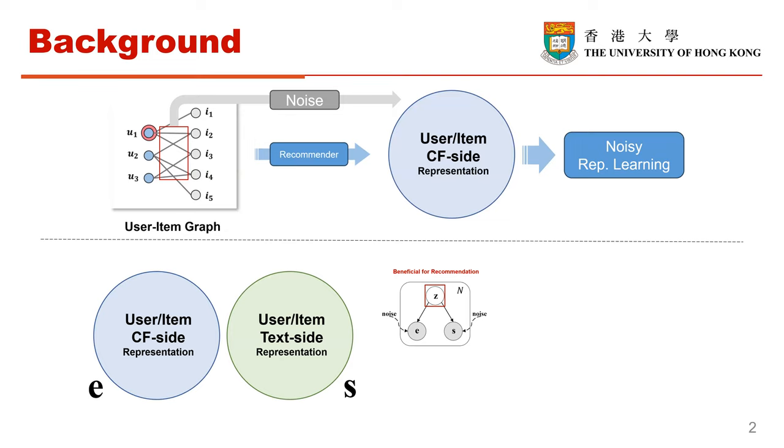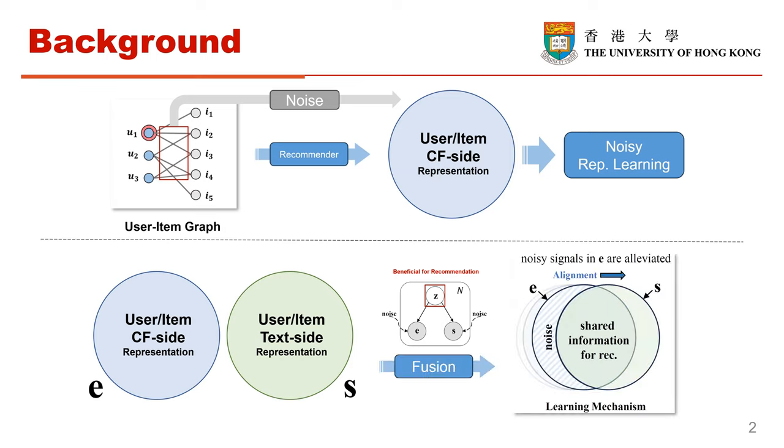However, they may also contain additional information which can be viewed as noise. An ideal learning process will bring collaborative filtering feature representations closer to the textual modality representations. This will increase the proportion of shared information during the learning process, which is beneficial for recommendation, thereby reducing the noise ratio and achieving denoising effects. This is the goal of our representation learning process.